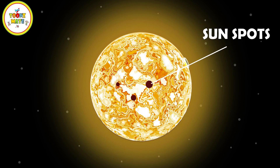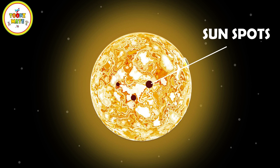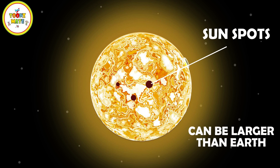Sunspots are dark areas that occasionally appear on the Sun's surface. They are cooler regions caused by intense magnetic activity. Sunspots often occur in pairs or groups and can be larger than Earth.